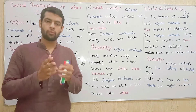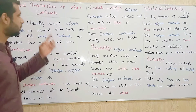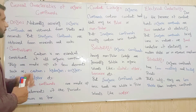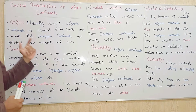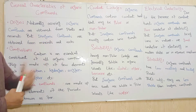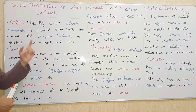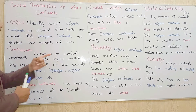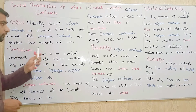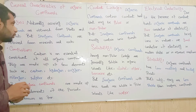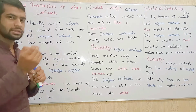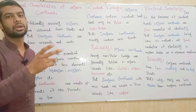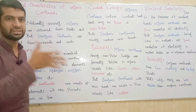Assalamualaikum viewers, now we will discuss the topic of general characteristics of organic compounds. The first point of organic compound is origin. Naturally occurring organic compounds are obtained from plants and animals, but inorganic compounds are obtained from minerals and rocks. Organic compounds are sourced from plants and animals, while inorganic compounds are sourced from minerals and rocks.